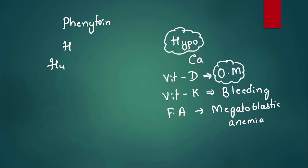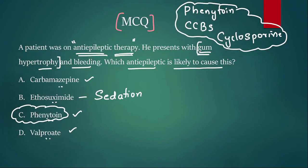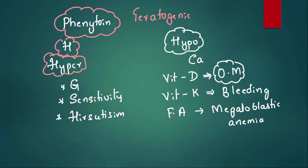Coming to the hyper aspect of phenytoin, it increases glucose hyperglycemia. It can cause hypersensitivity. And it can cause high growth of hair in females, that is called hirsutism. And the question is, is it safe in pregnant women? No. It can cause fetal hydantoin syndrome, so the drug is teratogenic in nature. Avoid in pregnant women. Remember phenytoin for all this H - hyperglycemia, hypersensitivity, hirsutism. That is why in the question you can see the drug causes gum hypertrophy and bleeding because of decrease in vitamin K. We understood the major adverse effects of phenytoin.